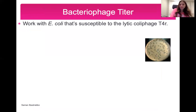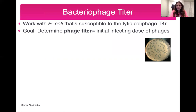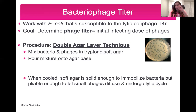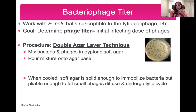In this experiment, you're going to work with E. coli that's susceptible to a lytic colophage — a phage that will cause lysis in E. coli. We're looking at the lytic cycle, not the lysogenic cycle. The goal is to determine the initial infecting dose of phages in E. coli, which we call the phage titer. The procedure is called the double agar layer technique. You have bacteria — specifically E. coli — and phages in tryptone salt agar. You mix the bacteria with the phage, adding them together in this liquid jello-like material.